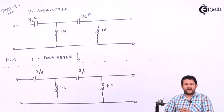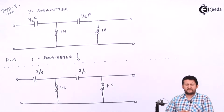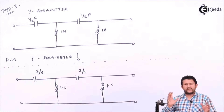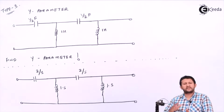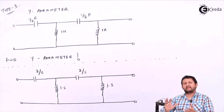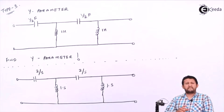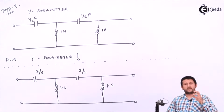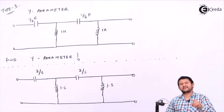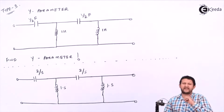Let's have a look at Y parameters. Initially we started with Z parameters and the ABCD parameters, and for both we were solving with respect to KVL. When we start with Y parameters, something is different — in this case you have to start with KCL. The reason is that in Z parameters the equations were in terms of voltage, but in Y parameters the equations are in terms of current, so we need to apply KCL, not KVL.